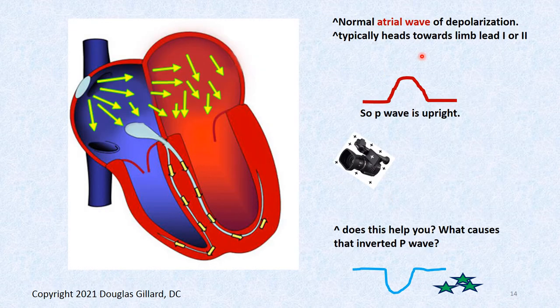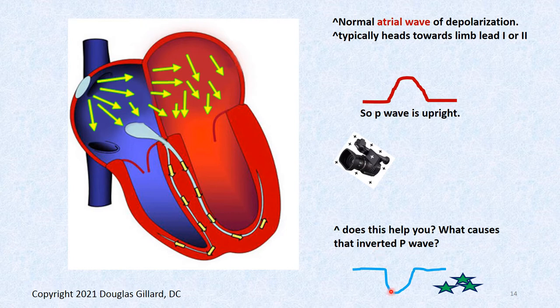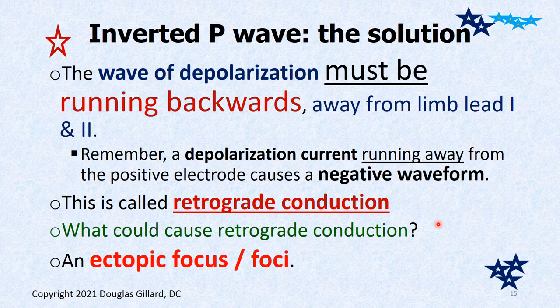Here's the hint: if limb lead 1 or 2 sees the atrial current coming right at it — like in the normal picture — it draws the wave upright. What phenomenon would make the same camera draw the wave upside down? If the current was going the other way — moving away from the lead — it draws an inverted curve. The wave of depolarization must be running away from limb lead 1 or 2. This is called retrograde conduction. An inverted P wave is caused by retrograde conduction. Make a note card of that.